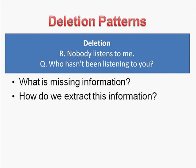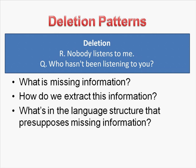So what's the missing information? How do we extract this information? This is a question for you to ask yourself so that you can find out a little bit more. What's in a language structure that presupposes missing information? So when somebody says 'nobody listens to me,' we don't know who that nobody is or who those nobodies are. We have no idea what listening really means and under what context, under what situation. And maybe this particular situation is very unique and it may not mean nobody at all.